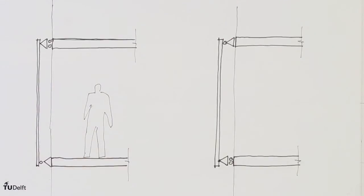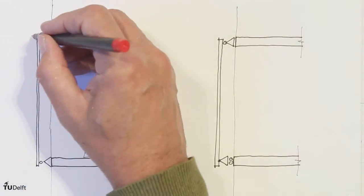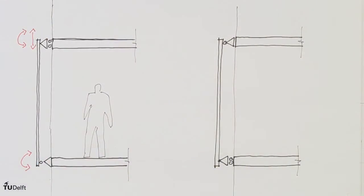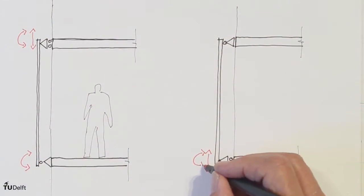In a vertical direction we can make the top anchor flexible, a roller, so the facade element is standing. Or make the bottom anchor a roller, so the facade element is hanging.